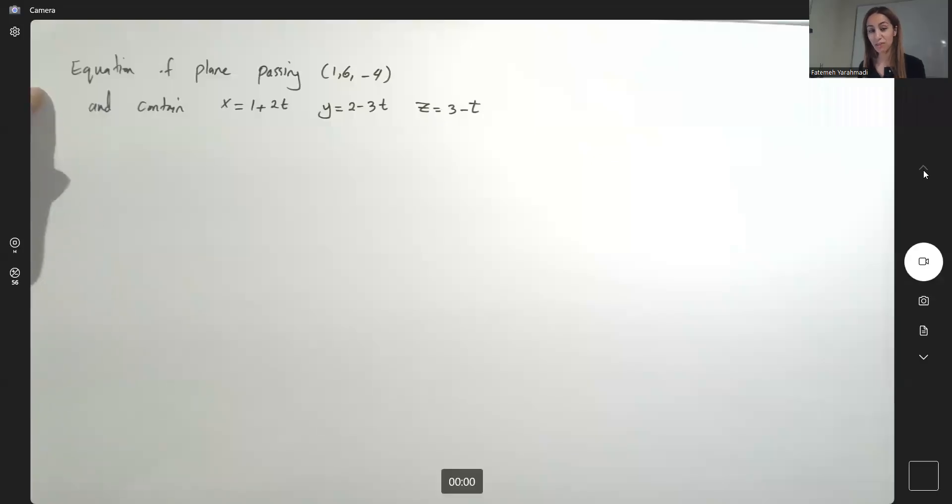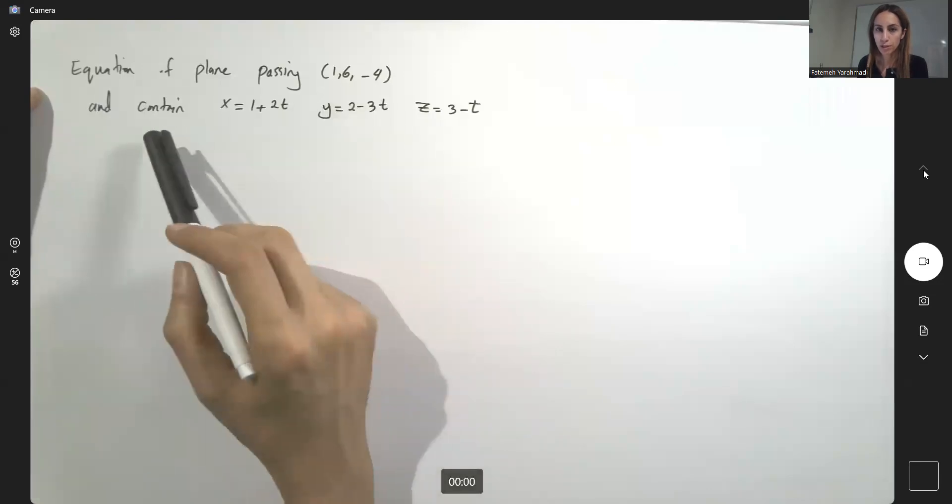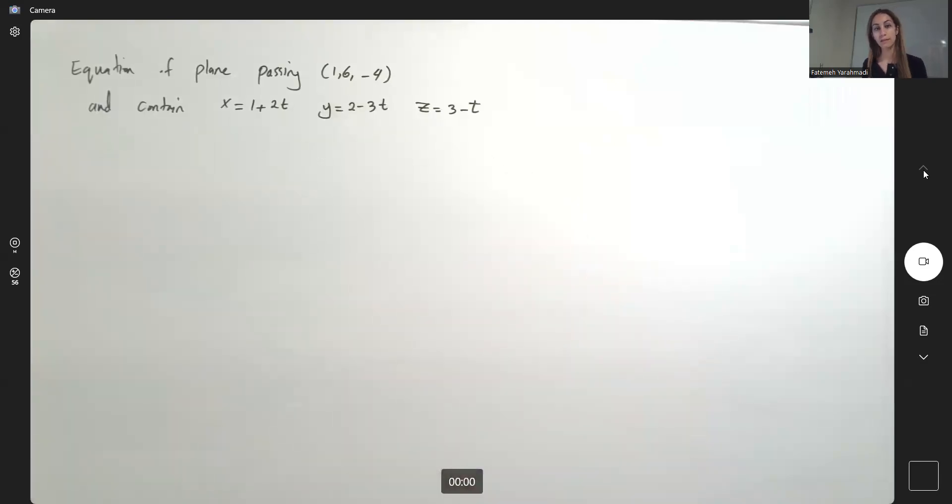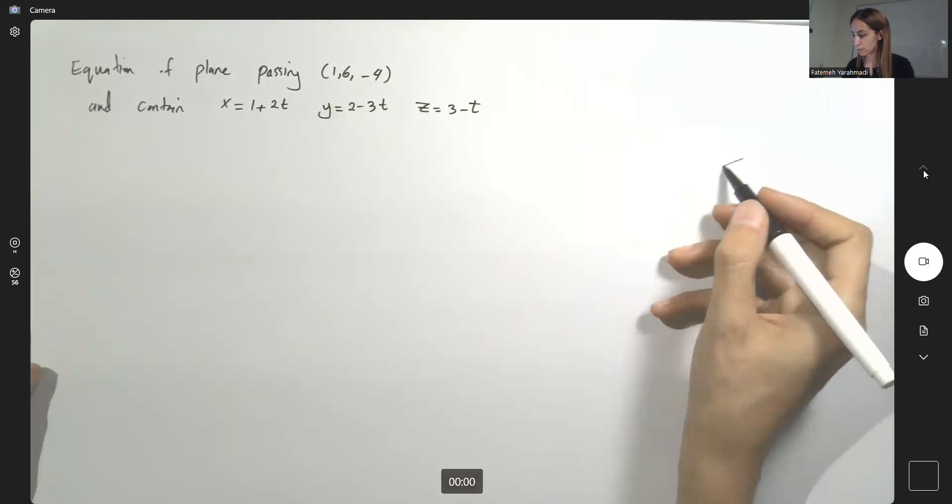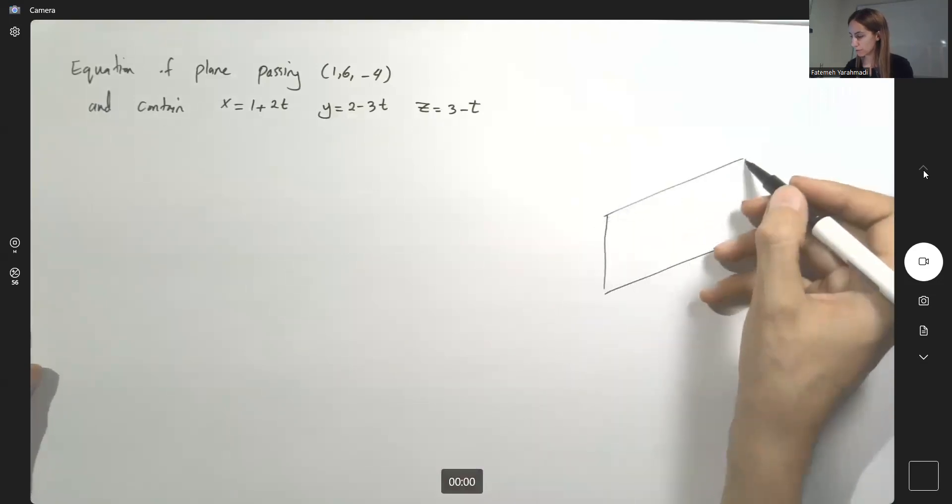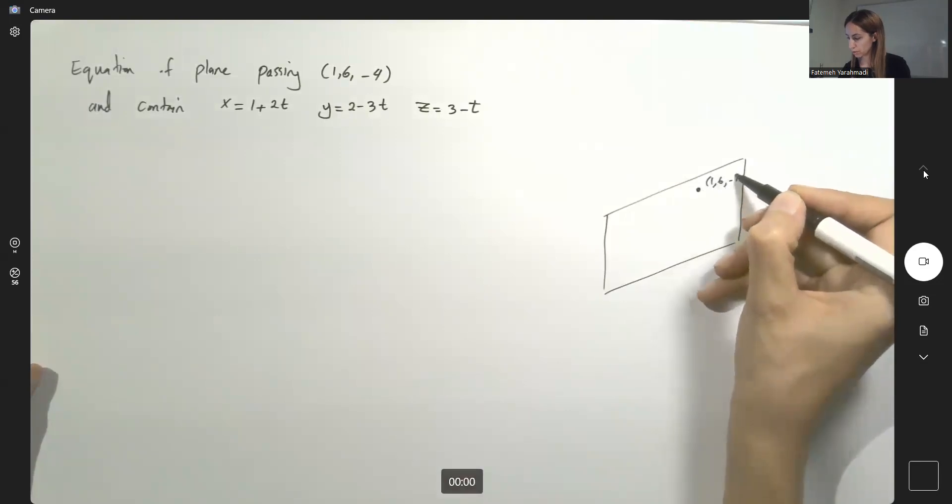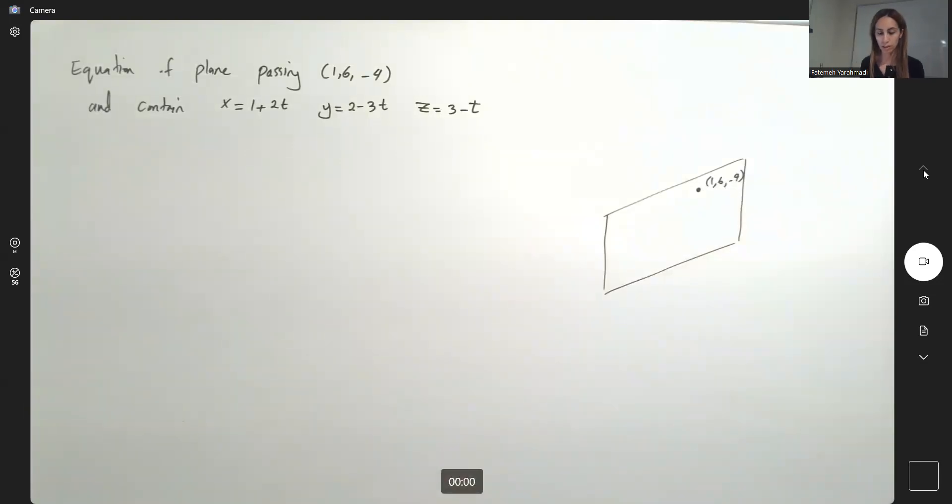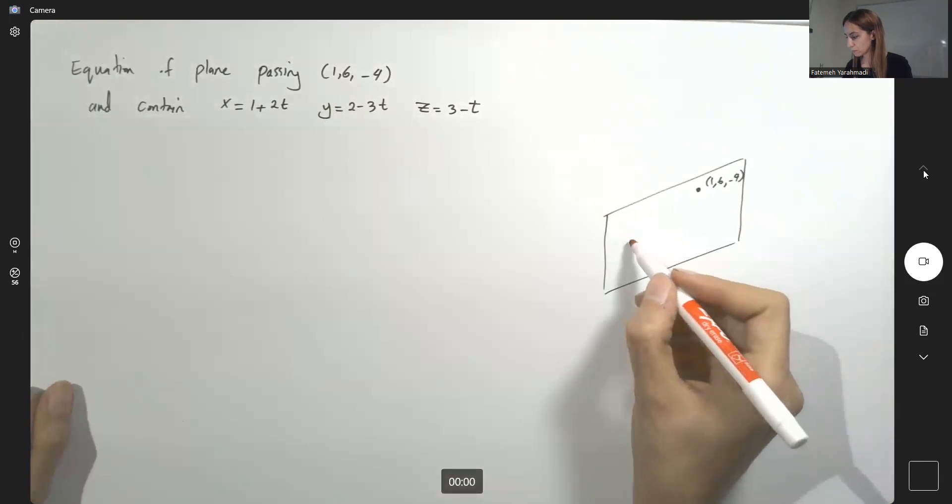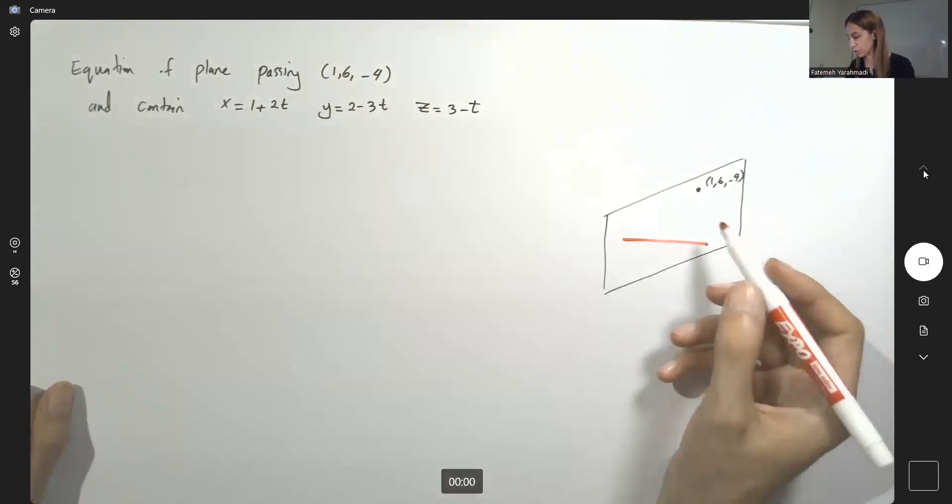Welcome back everybody. So here we're going to find equation of a plane passing through this point and containing this line. So here's the situation that we have. We have a point which is 1, 6, negative 4 and we have a line. This is our line just like the typical situation.